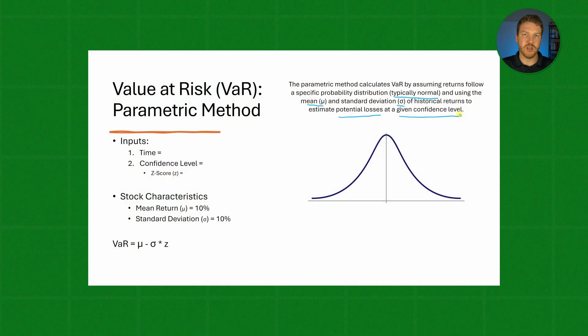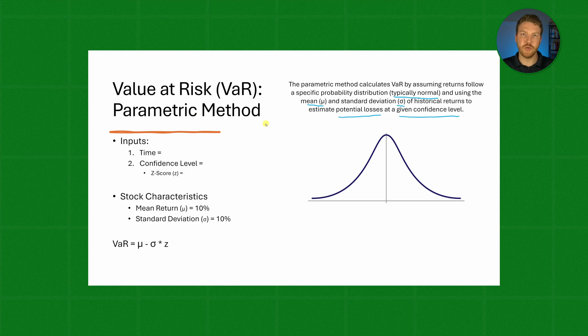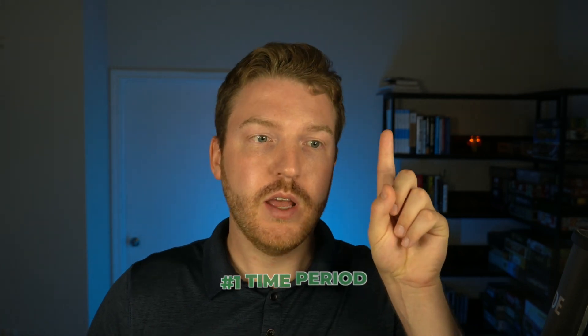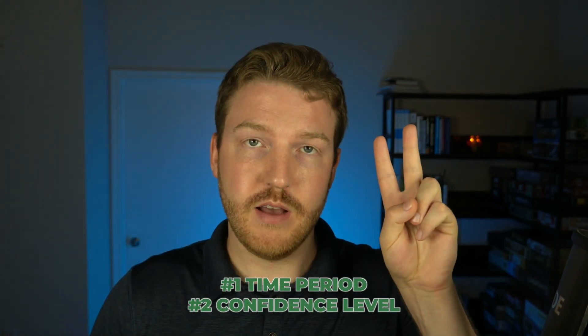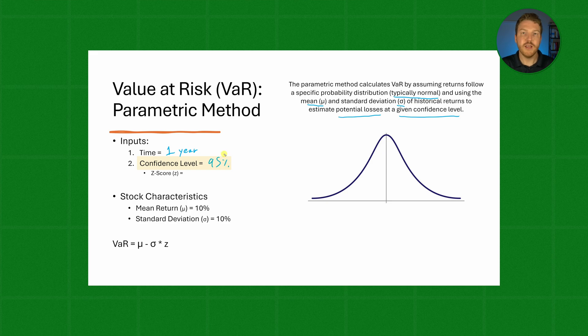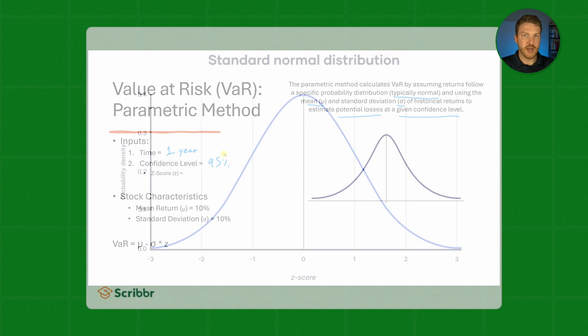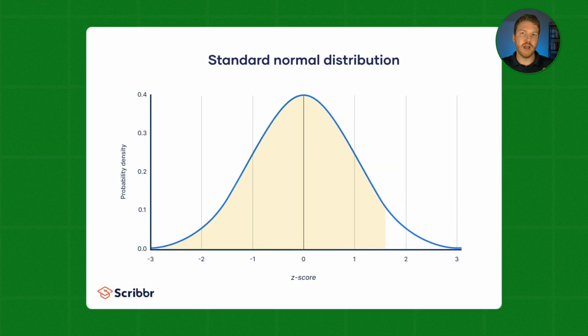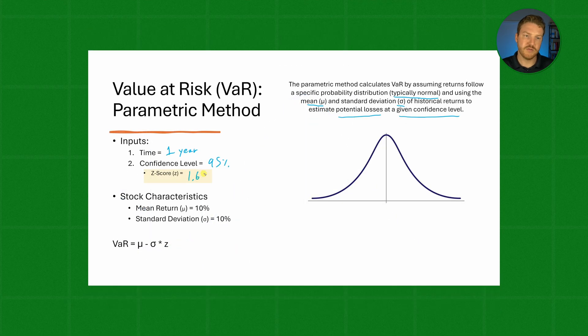So let's just jump through an example where we calculate VaR with the parametric method. Remember that when calculating VaR we need to specify: one, a time period, and two, a confidence level. So in this example let's use a time period of just one year and a confidence level of 95%. Now if we use a one-tailed test, a confidence level of 95% will give us a z-score of 1.65.